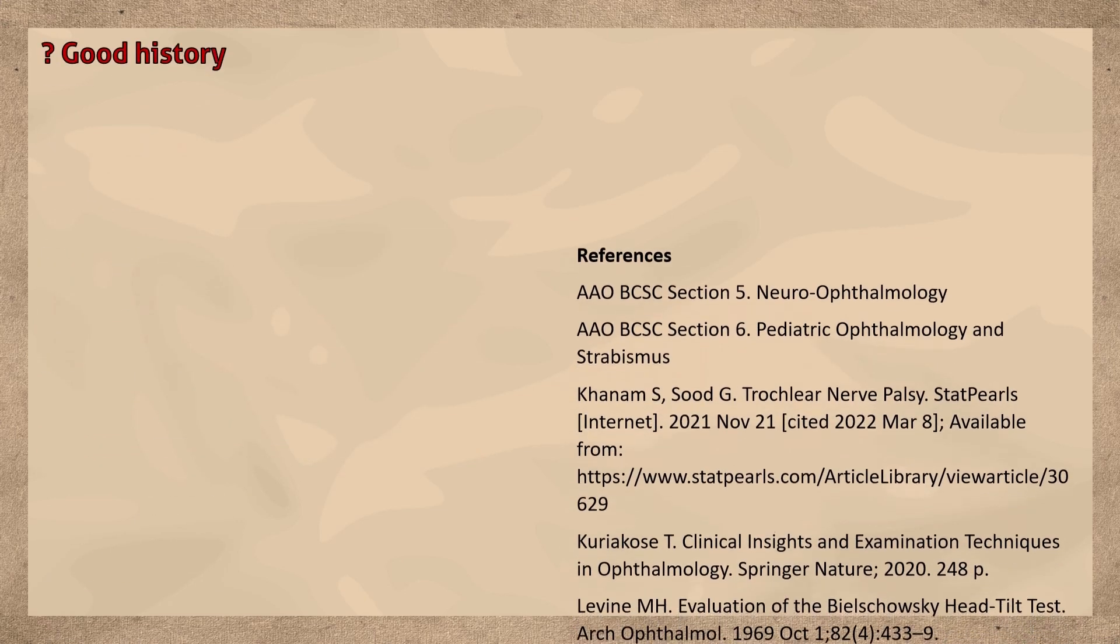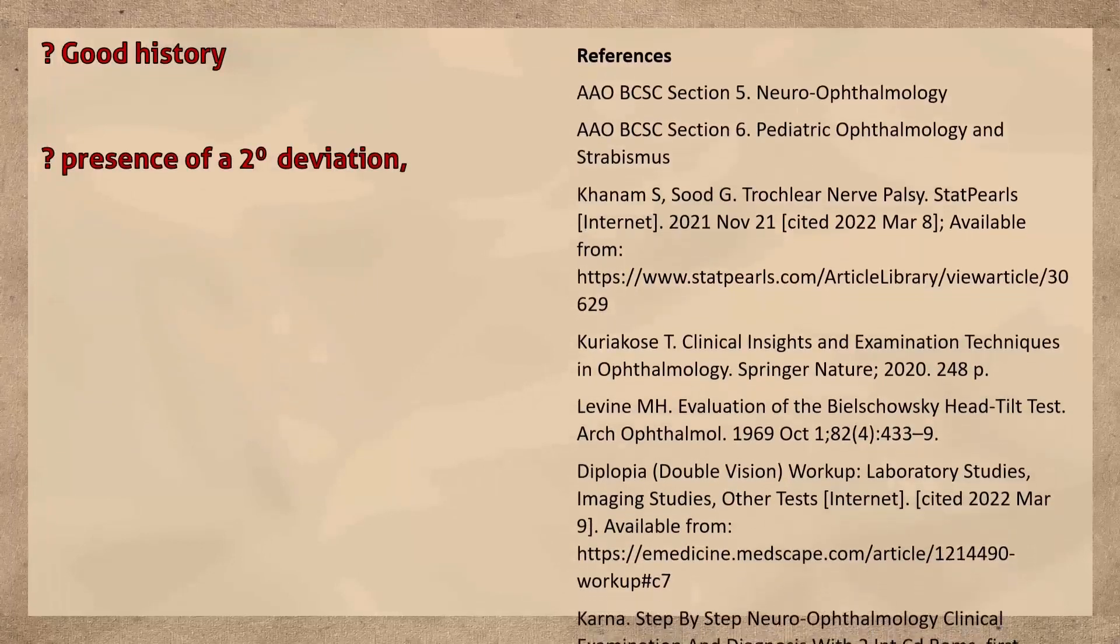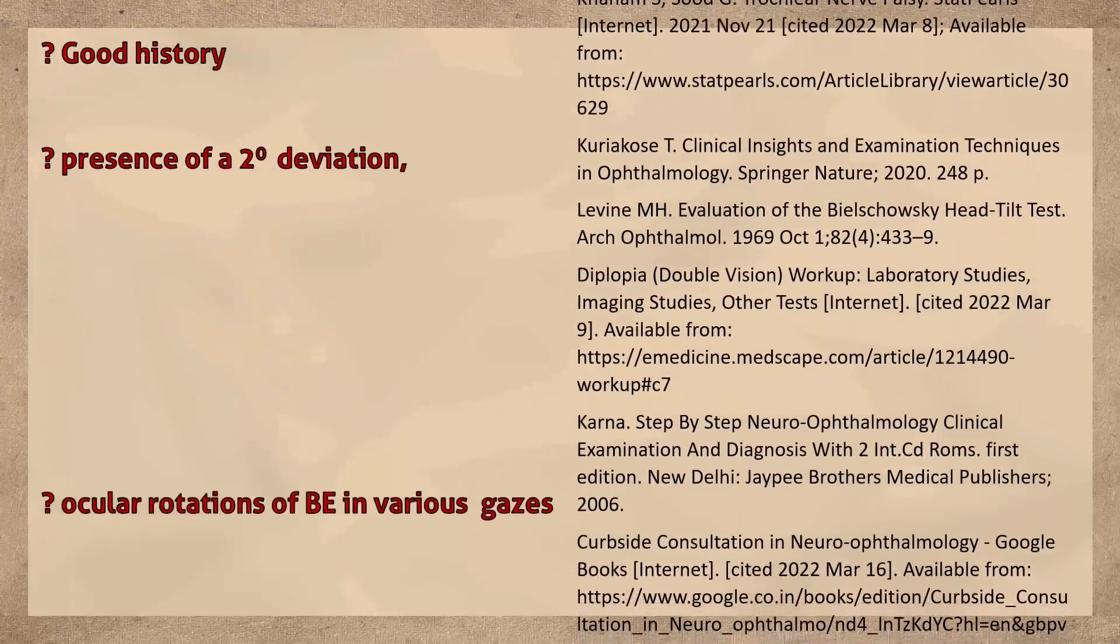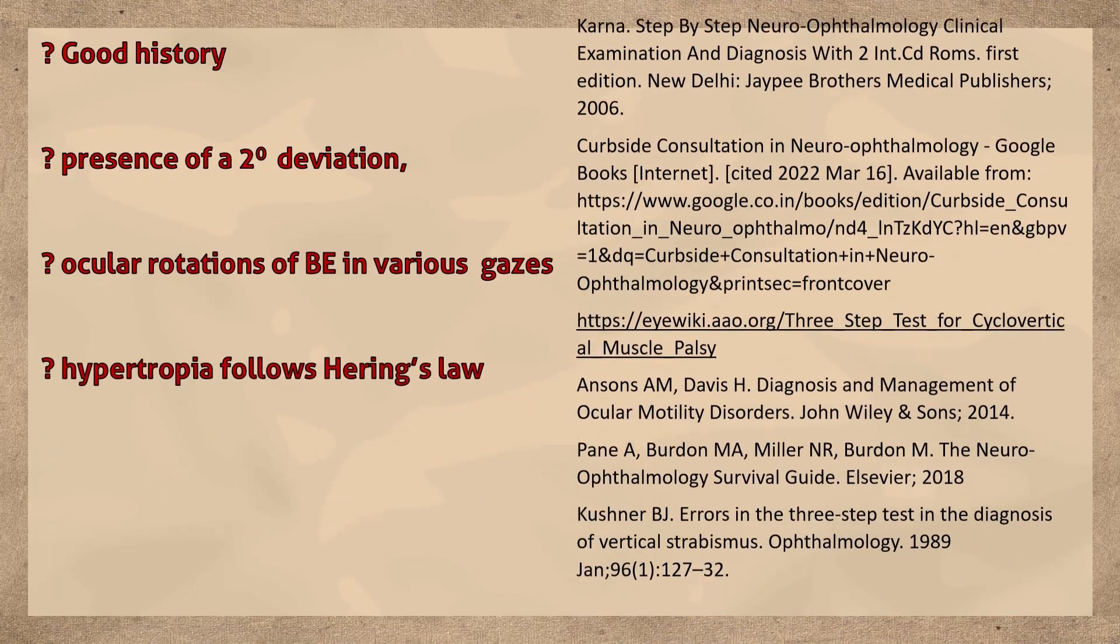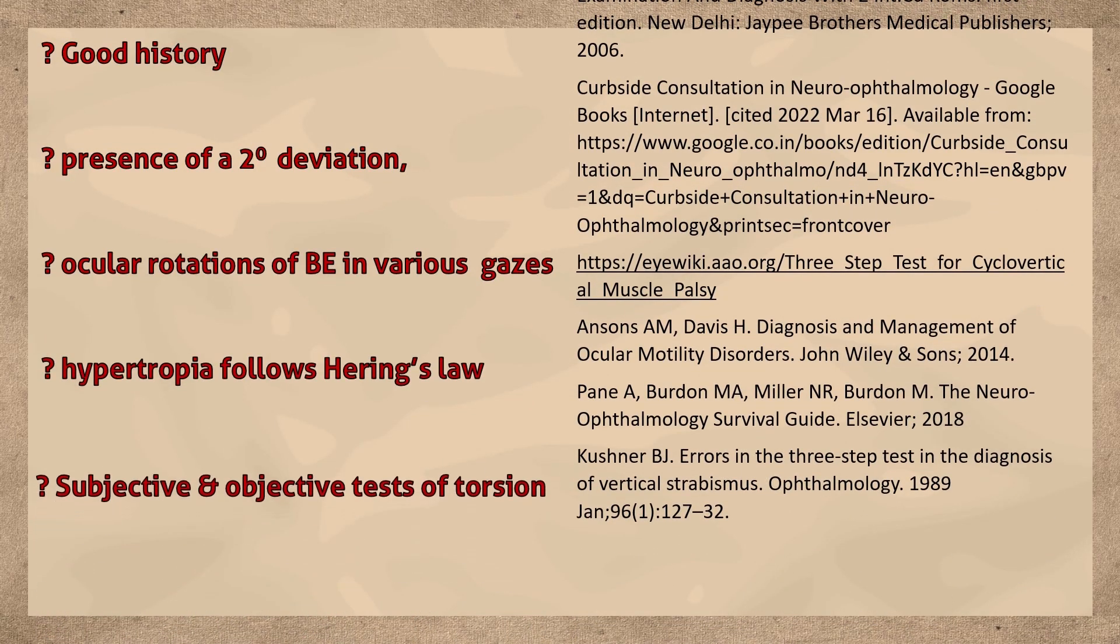Additional tests of value include taking a good history, looking for the presence of a secondary deviation, looking for ocular rotations in the various gazes, seeing whether the hypertropia follows Hering's law, looking for evidence of torsion, and if there is a change of hypertropia in the supine position.